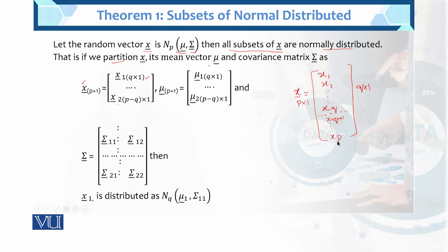The second set has dimension (p−q)×1, with 1 column. The variance-covariance matrix sigma is partitioned into variances and covariances. Then x1 is distributed as multivariate normal with mean vector mu1 and variance-covariance matrix sigma11. This is the statement of the theorem.